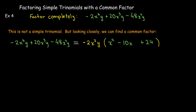So I'm looking at 2, 20 and 48. The largest number that divides into them is 2, but I'm going to factor out negative 2. Among the x's, the smallest exponent is x², so x² comes out. And every term has a factor of y, so y will be a common factor as well. What's left inside the parentheses is a simple trinomial with a positive x², which is what we want.